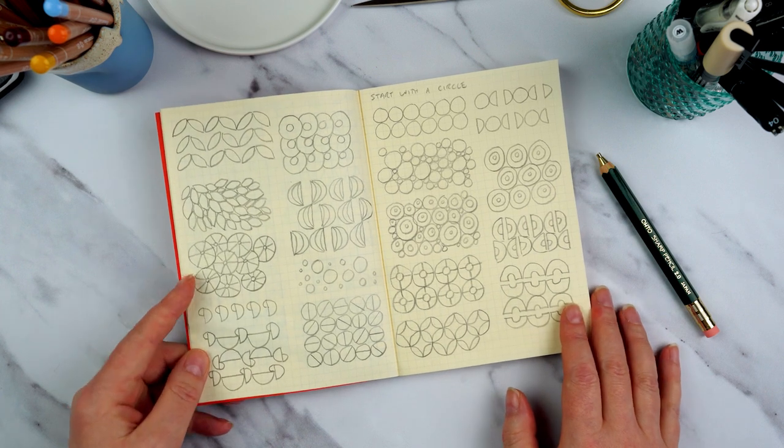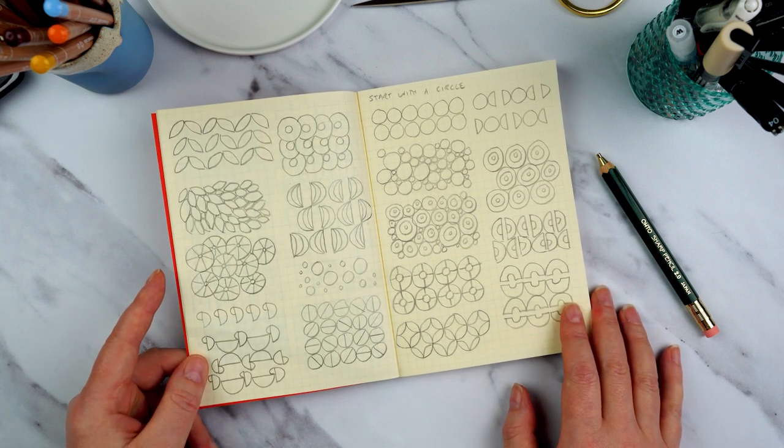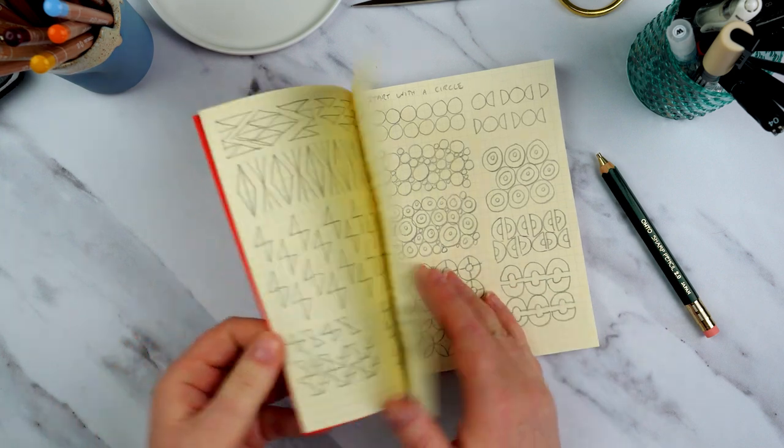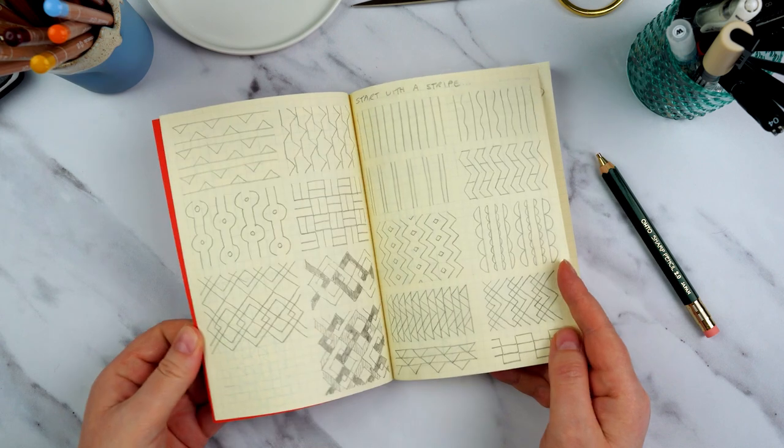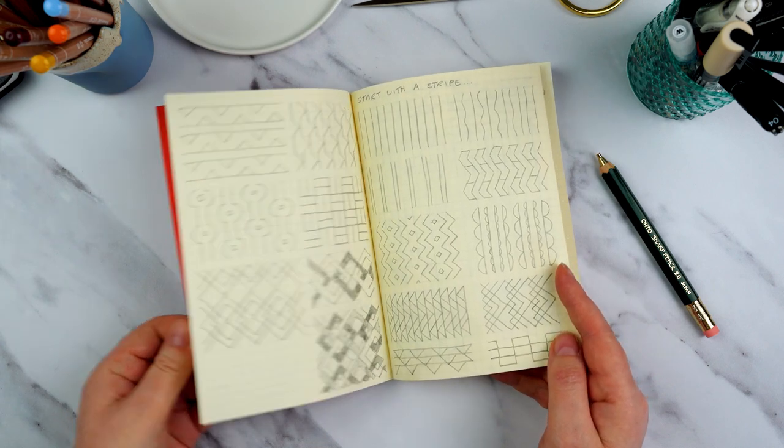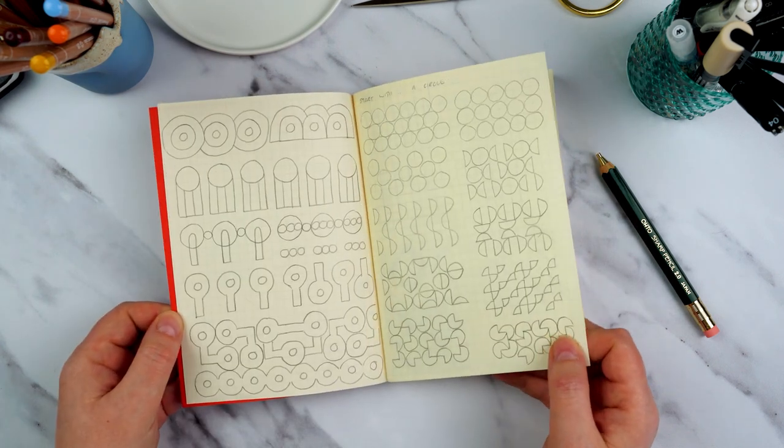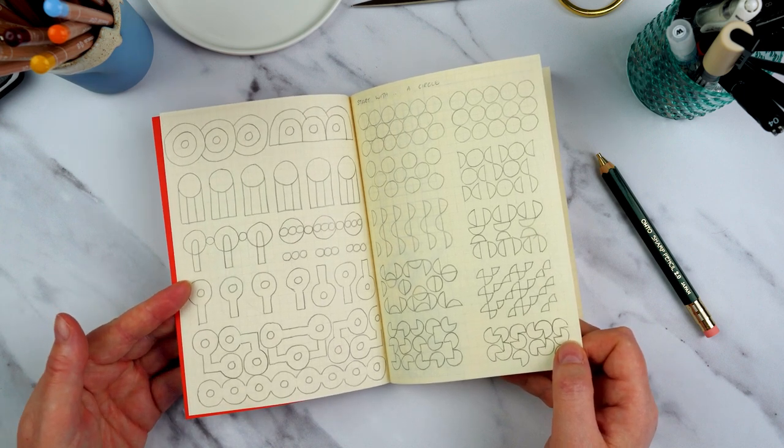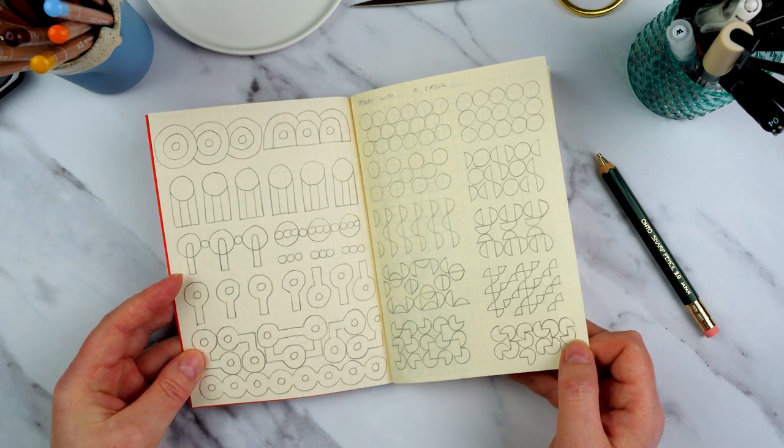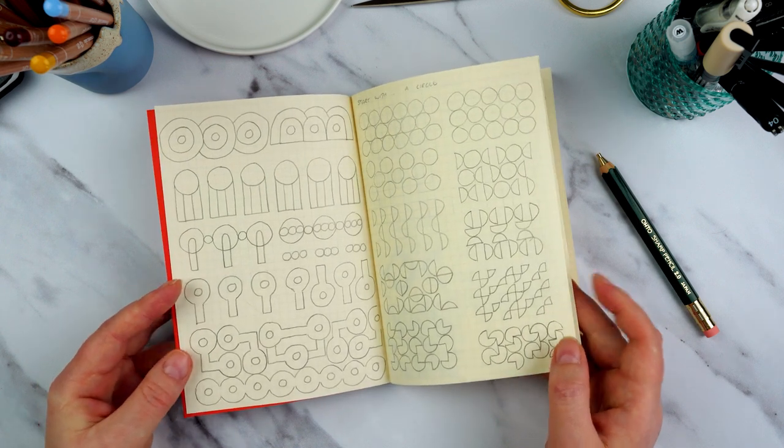And then what I've got here is a design resource that I can come back to again and again and refer to whenever I'm a bit stuck and I'm looking for a pattern to work on. I can kind of have a look through and look at some of the ideas that I've already generated and see if there's anything in here that might look interesting in a painting or whatever it is that I'm doing.